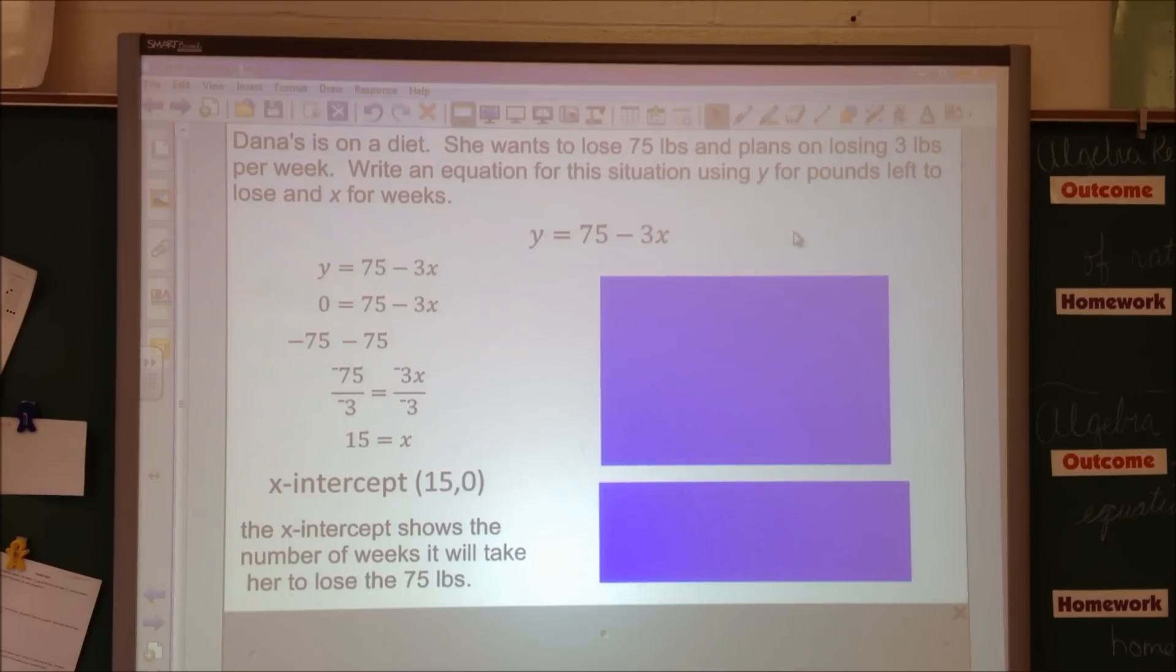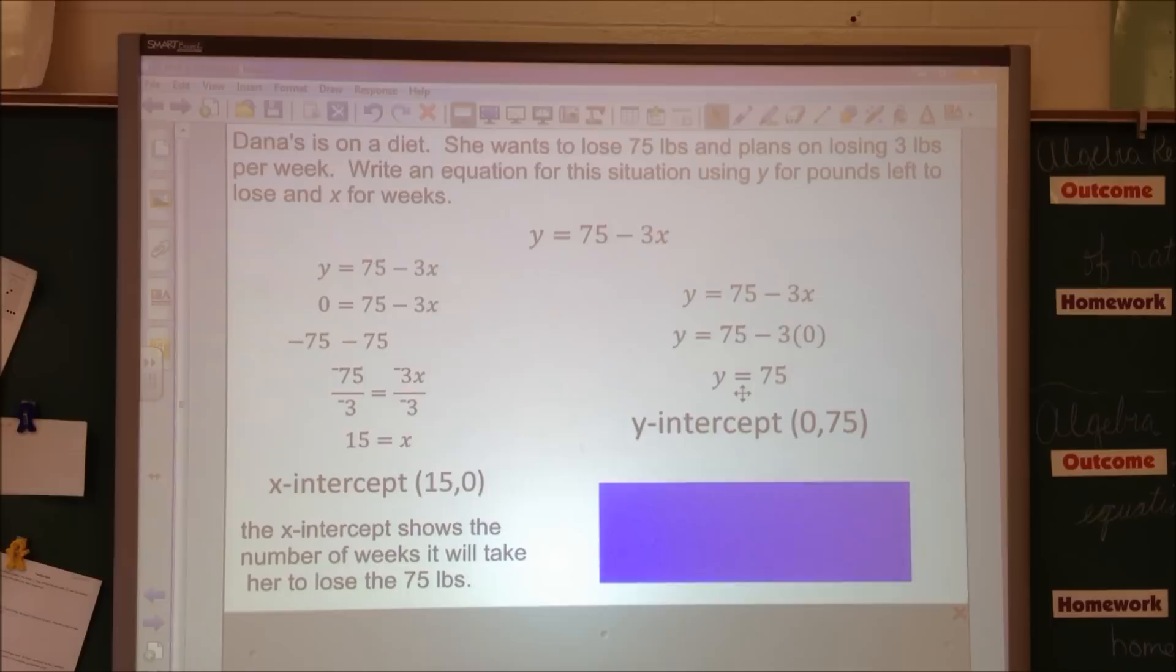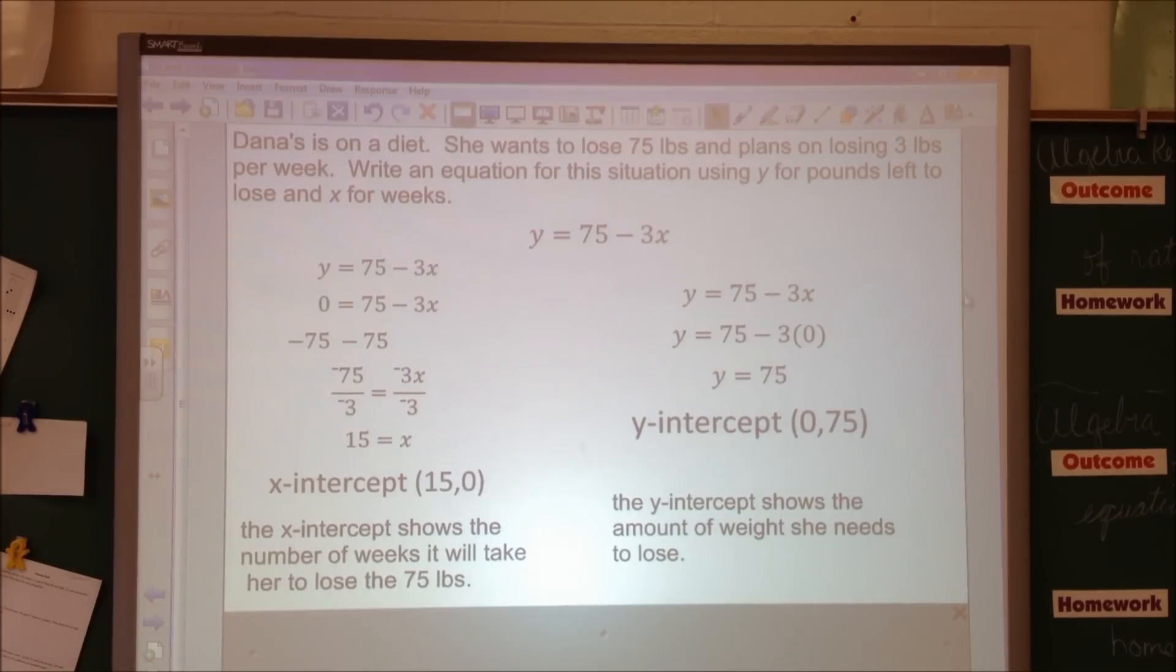Now let's look at our y-intercept. Remember, when y-intercept, x equals 0. So if I just cover this up, I get y equals 75 if you do the fast way. What does that mean? Well, remember, x represents weeks. So at 0 weeks, y represents the amount of pounds left to lose. So at 0 weeks, she's going to have to lose 75 pounds. The y-intercept is showing us the amount of weight she needs to lose. If you need to, pause up the video, write those down.